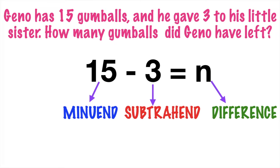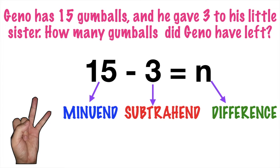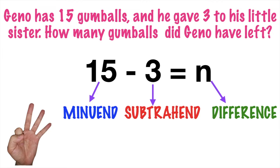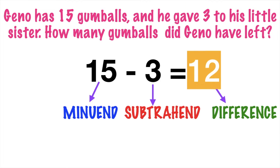So let's solve this problem using the count backwards method. From 15, let's count backwards 3 steps. 15 on your mind: 15, 14, 13, 12. So that means 15 minus 3 is equal to 12.